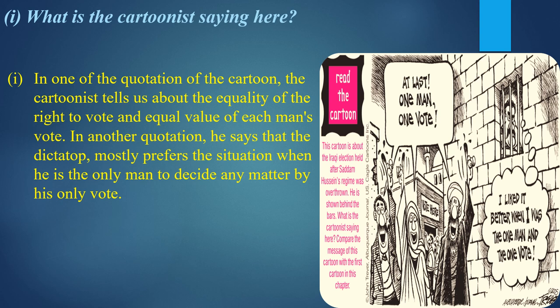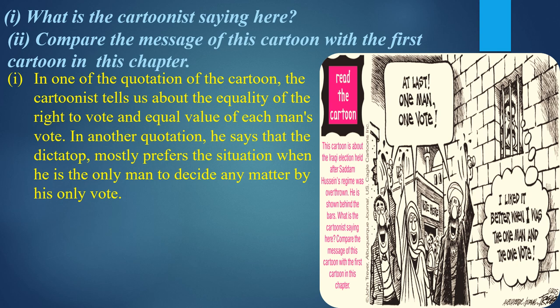For the dictator Saddam Hussein, one vote was equal to the vote of every person, and 'one man' meant he himself — Saddam Hussein only. The next question asks us to compare this cartoon with the first cartoon in the chapter. This cartoon shows the consequences of the first cartoon — the US army personnel elevating the process to form a democracy in Iraq.